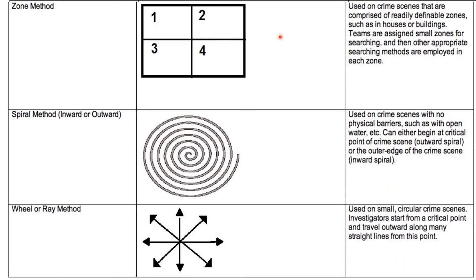The zone method is used on crime scenes comprised of readily definable zones, such as in houses or buildings. Teams are assigned small zones for searching, and then other appropriate searching methods are employed in each zone. The spiral method can be inward or outward, and is used where there are no physical barriers, such as open water. It can begin at the critical point of the crime scene — that is outward spiral — or at the outer edge — that is inward spiral. The wheel or ray method is used in small and circular crime scenes. The investigator starts from the critical point and travels outward along many straight lines from this point.